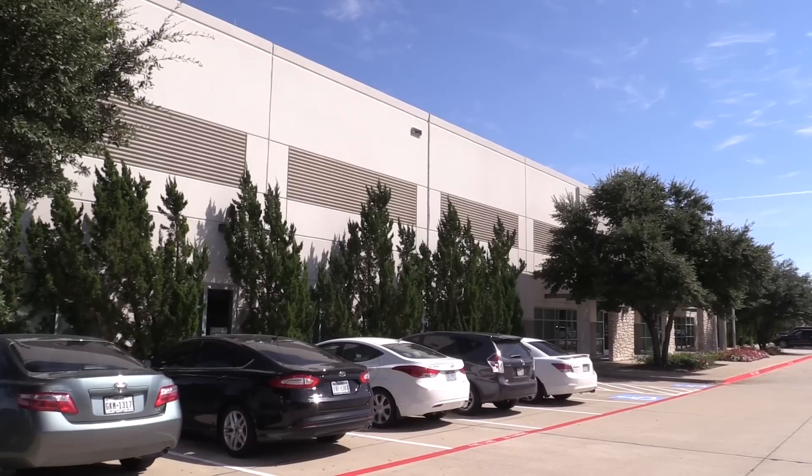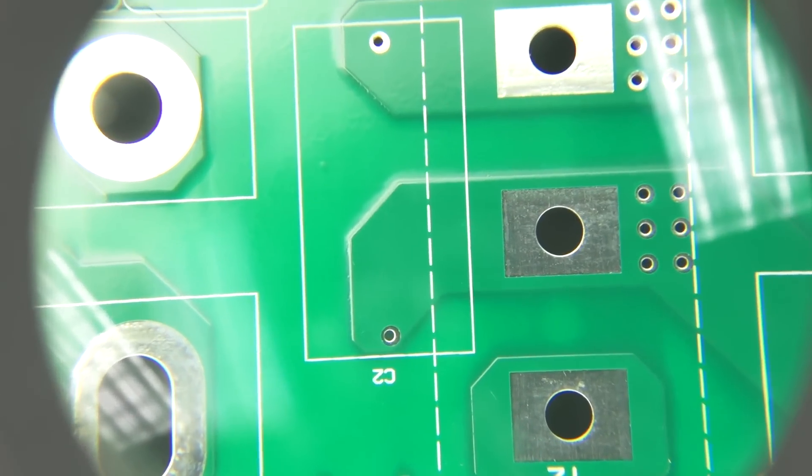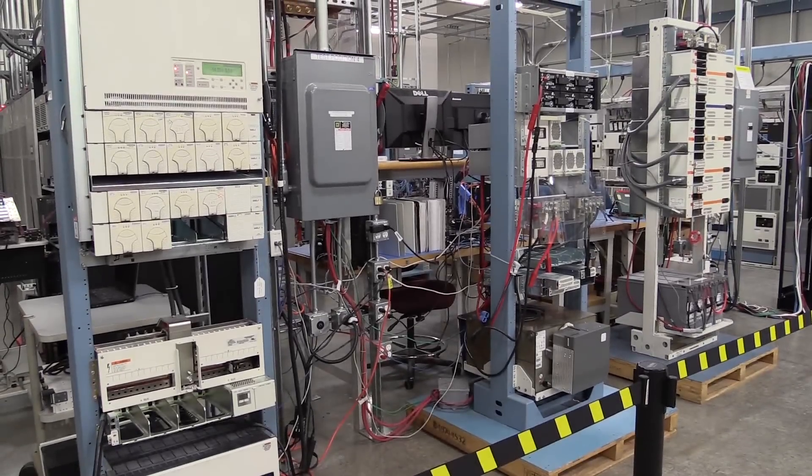So George, tell me where we are right now. We're in Plano, Texas, inside GE Critical Power Facility. This is the location where we design and test critical power components and systems for telecom, data centers, and what have you.